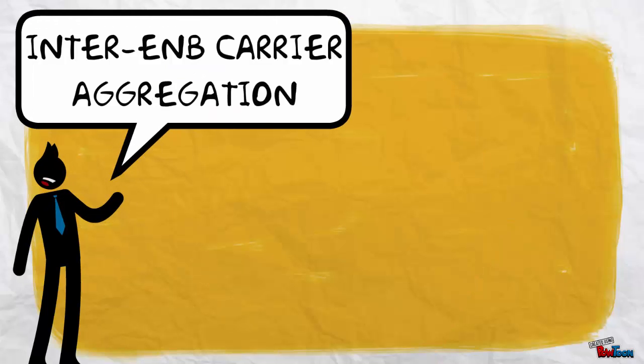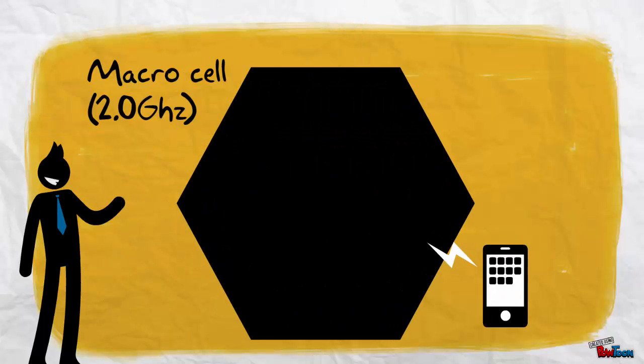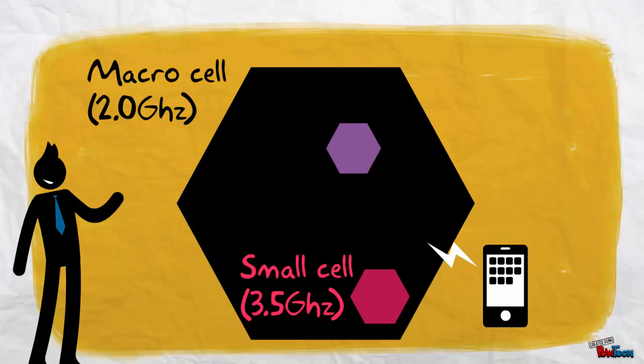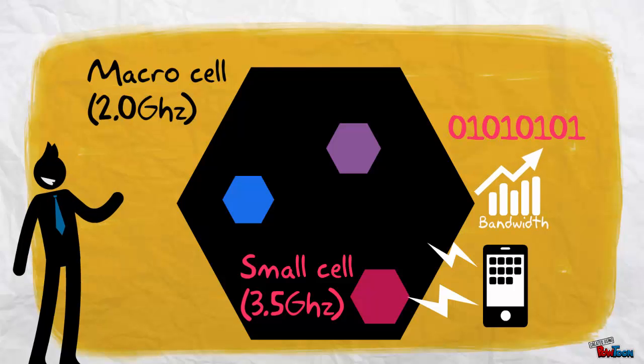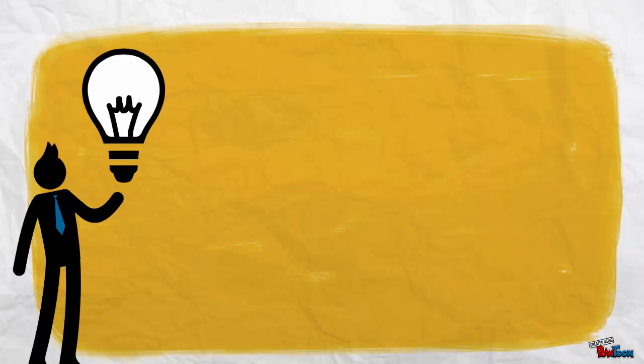Inter-ENB carrier aggregation can be used to boost data bandwidth within a limited area. This works by deploying a small cell with higher frequency into a macro cell to boost the traffic capability. Independent processes are used to communicate and data radio bearer with QoS used to determine where the traffic will be directed to.